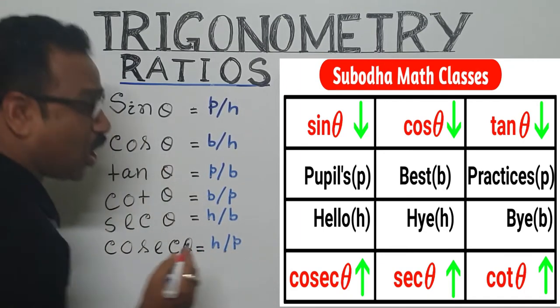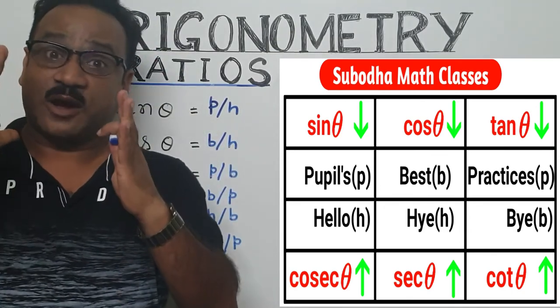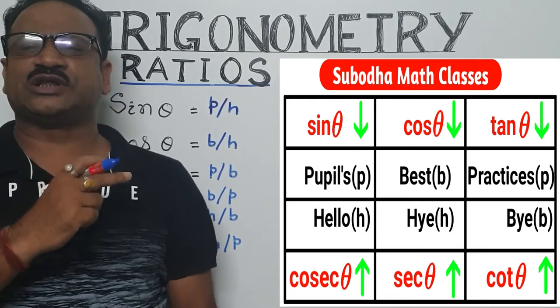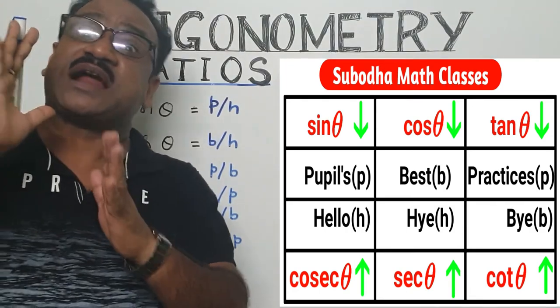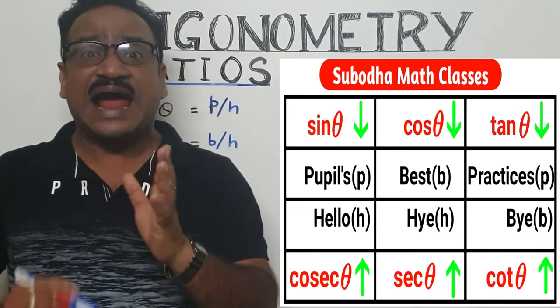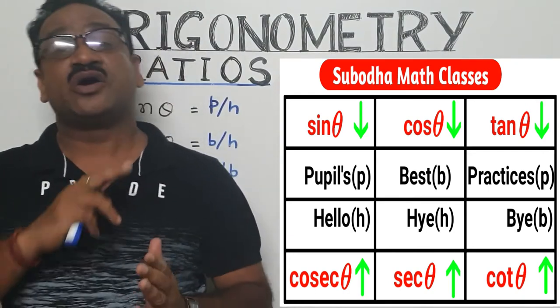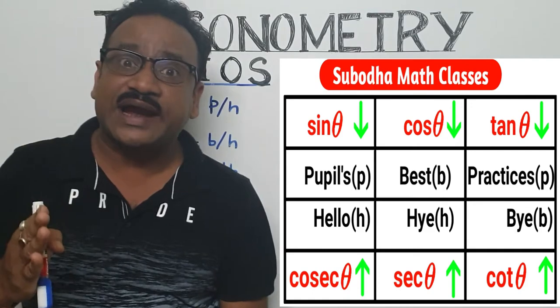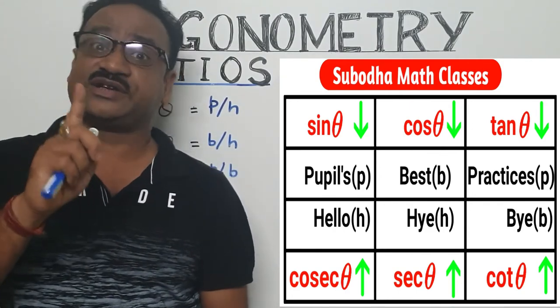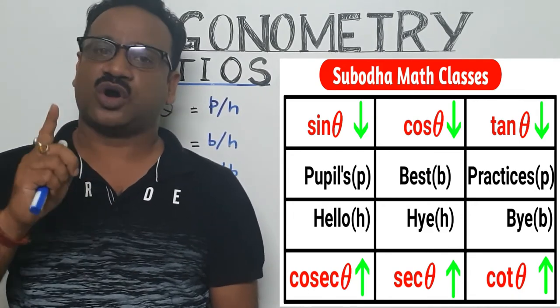Now cot θ - see, arrow pointing upwards - so this will be B by P. Now sec θ, you'll see this will be H by B, and cosec θ will be H by P. So without remembering the table, we can write it very comfortably, very quickly.